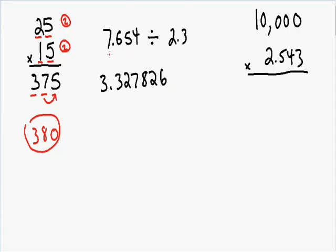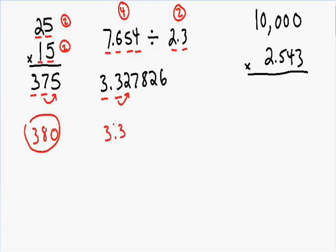Let's take a look at the numbers we just divided. We have 7.654, which has four significant figures, and we have 2.3, which has two significant figures. Our final answer has to have the same amount of significant figures as the smaller of the two numbers. Since 2.3 only has two significant figures, then our final answer also has to have two significant figures. So we can use the 3 and the 3, and the third digit we use for rounding. Since it's smaller than 5, we don't round up — it stays the same, so our final answer is going to be 3.3.